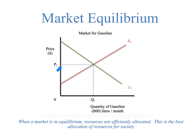That sounds like some really fancy economic language, and in a way it is — it's economic discourse. But what this is saying is that at that point right there, at P1, Q1, this is where the demand and the supply have found a place that both the demanders and the suppliers would be happy.